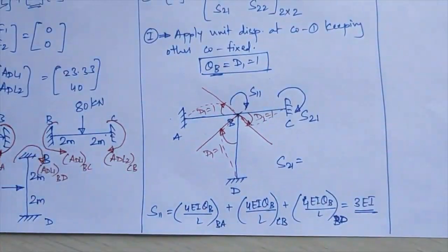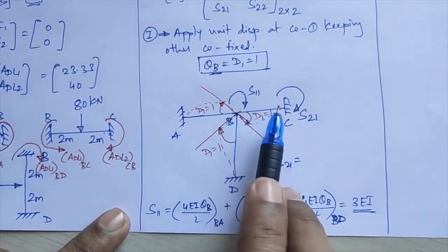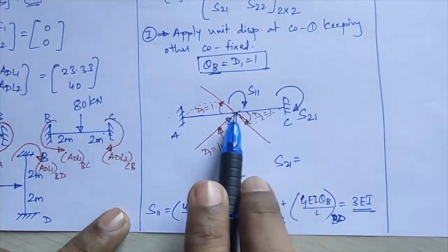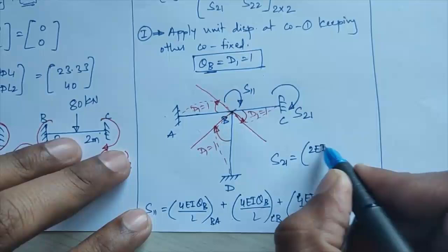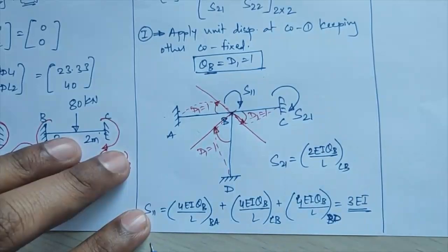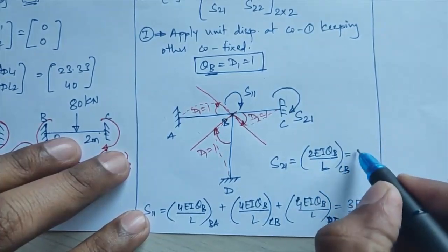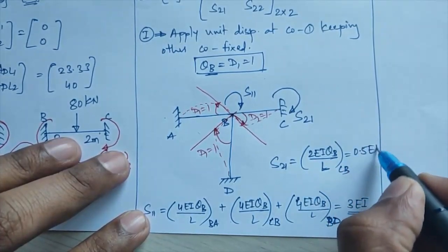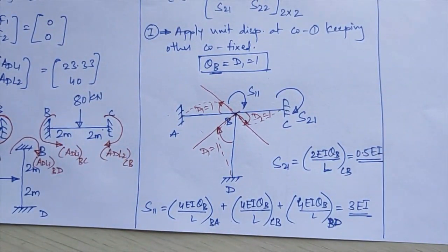For S21, joint C is the farther joint, and it applies only to member CB. S21 = 2EI·θB/L = 2×1/4 = 0.5EI. So from applying unit displacement at coordinate 1, we get S11 = 3EI and S21 = 0.5EI.